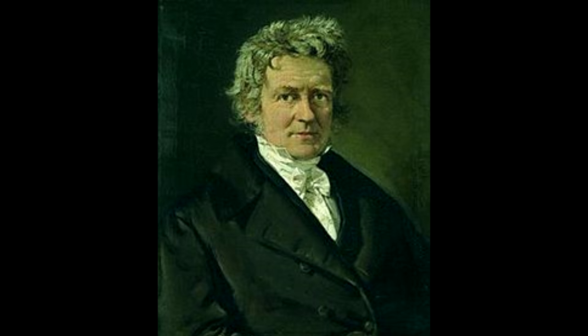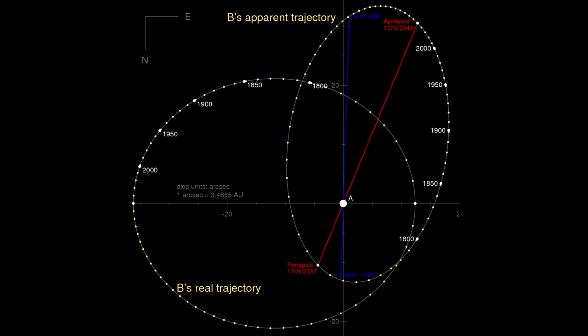The first successful measurements of stellar parallax were made by Friedrich Bessel in 1838 for the star 61 Cygni using a heliometer. The first well recorded observation of 61 Cygni was by James Bradley in 1753.